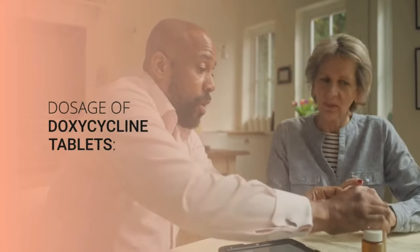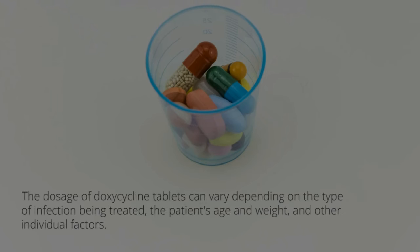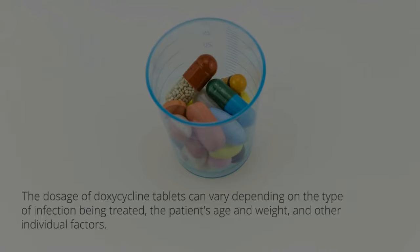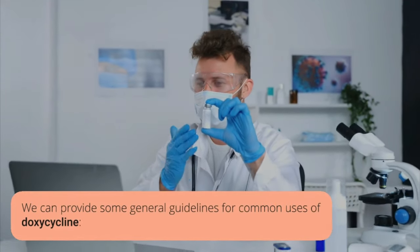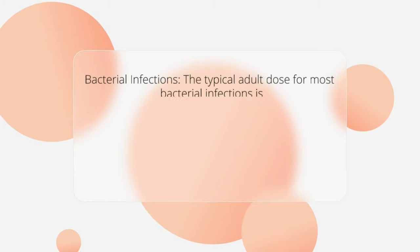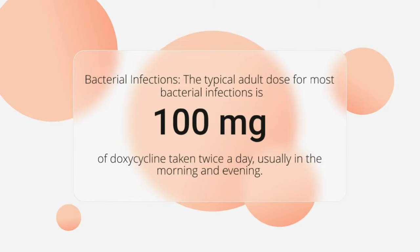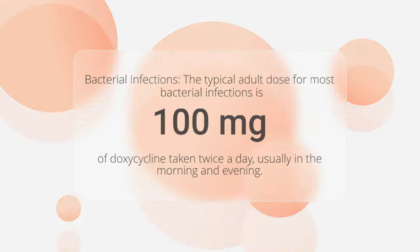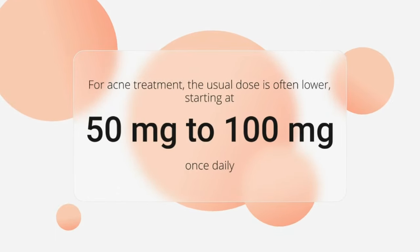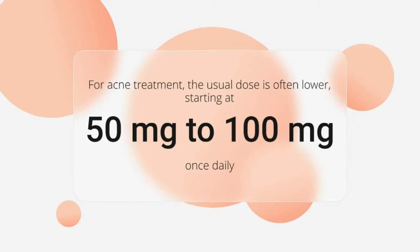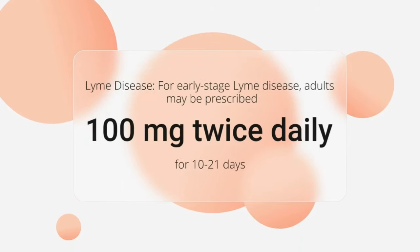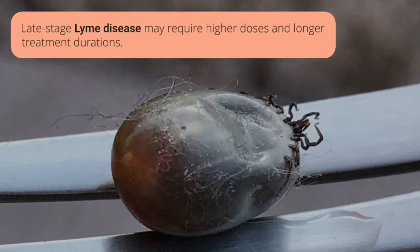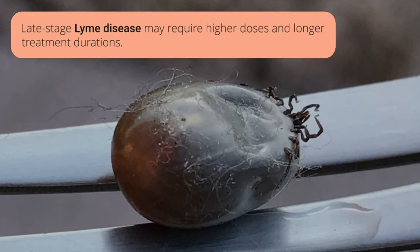Dosage of doxycycline tablets. The dosage can vary depending on the type of infection being treated, the patient's age and weight, and other individual factors. The typical adult dose for most bacterial infections is 100 mg taken twice a day, usually in the morning and evening. For acne treatment, the usual dose is often lower, starting at 50 mg to 100 mg once daily. For early-stage Lyme disease, adults may be prescribed 100 mg twice daily for 10 to 21 days. Late-stage Lyme disease may require higher doses and longer treatment durations.